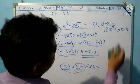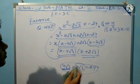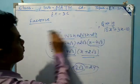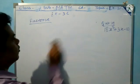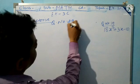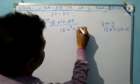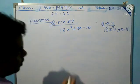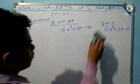Now another question, question number 29. That question is 18x² + 3x - 10. This is to be factorized.